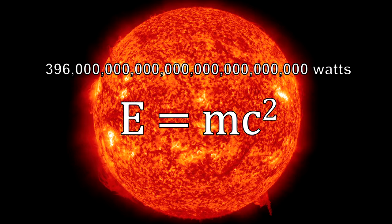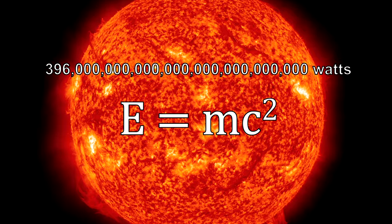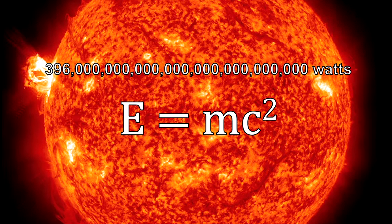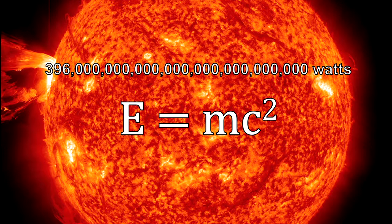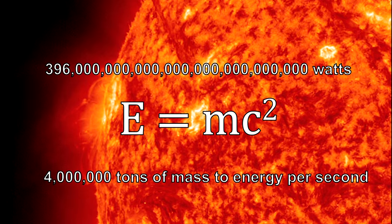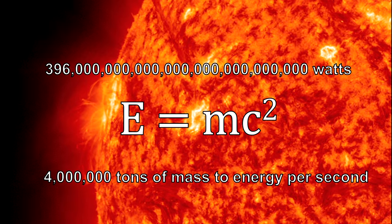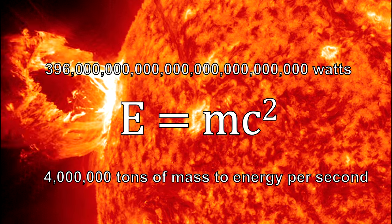Using Einstein's famous E equals mc squared, or energy equals mass times the speed of light squared, we calculate that the sun is fusing 600 million tons of hydrogen into helium every second, and in the process converting 4 million tons of matter into energy every second.